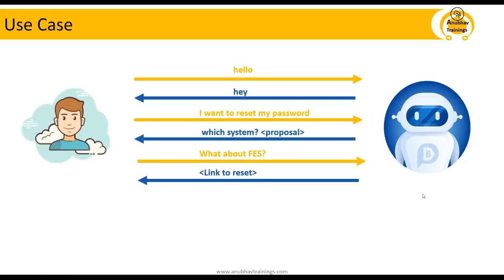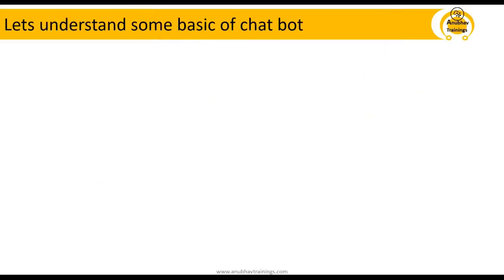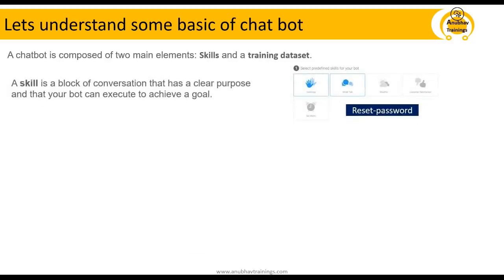This support was earlier handled by a basis person in your company, and now it is completely automated with the help of a chatbot. A chatbot is composed of two major components: a skill and a training data set. A skill is a block of conversation with a clear purpose that your chatbot executes to achieve a goal — for example, 'reset password'. Other skills could include greetings, small talk, checking weather, getting customer feedback, or setting an alarm. For our use case, we will develop a reset password skill from scratch.